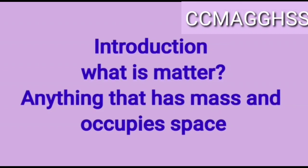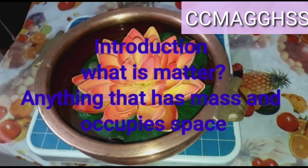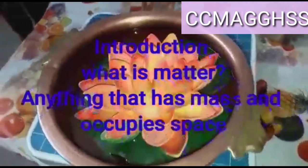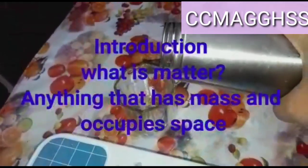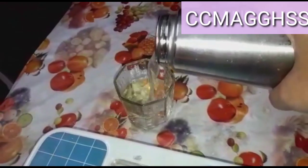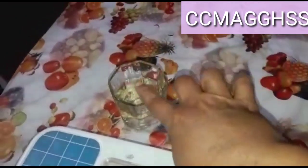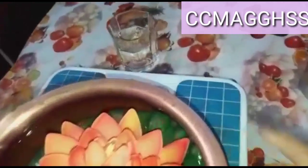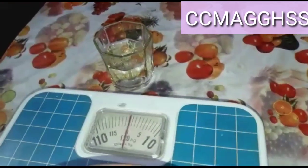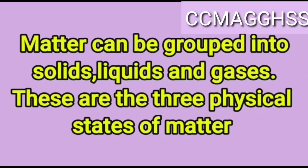Here I will show you one example. I kept one object on the weighing machine — can you see that? That object shows some weight. Now I pour water into a glass. What happened? That water occupies some space. So water occupies some space and the object has mass. We can say that matter is anything that has mass and occupies space. Matter can be grouped into solids, liquids, and gases based on these characteristics.